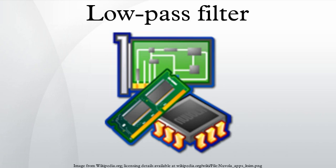Passive electronic realization. One simple low-pass filter circuit consists of a resistor in series with a load, and a capacitor in parallel with a load. The capacitor exhibits reactance, and blocks low-frequency signals, forcing them through the load instead. At higher frequencies the reactance drops, and the capacitor effectively functions as a short circuit. The combination of resistance and capacitance gives the time constant of the filter. The break frequency, also called the turnover frequency or cut-off frequency, is determined by the time constant.